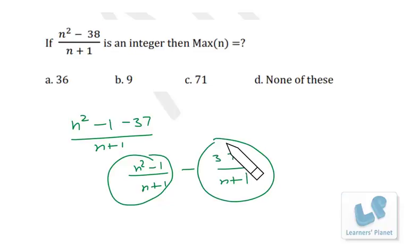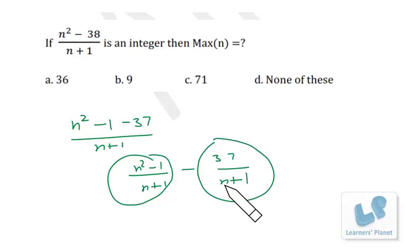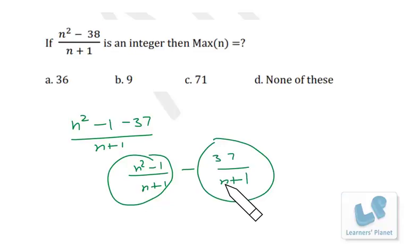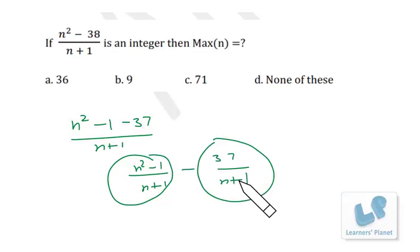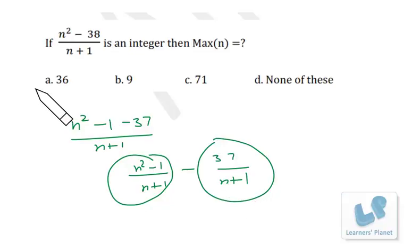So we need 37/(n + 1) to be an integer, meaning (n + 1) must be a factor of 37. Since 37 is prime, its only factors are 1 and 37. The maximum value occurs when n + 1 = 37, giving n = 36. Any n larger than 36 yields a proper fraction, not an integer. So the maximum value of n is 36.